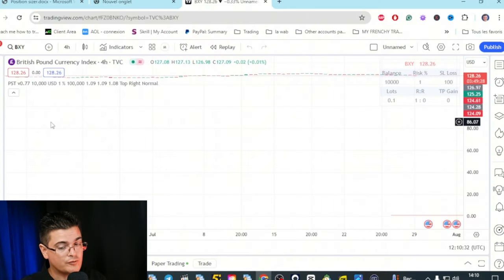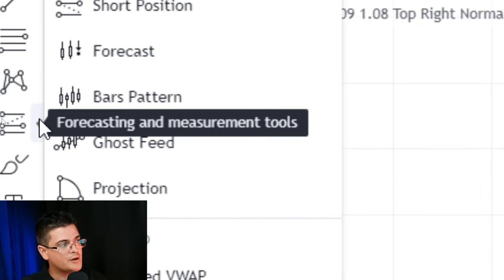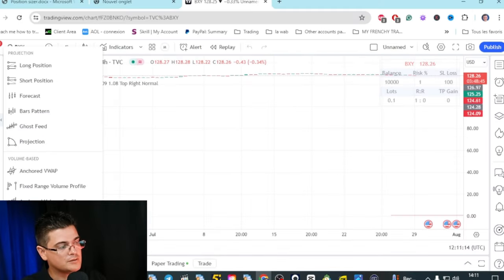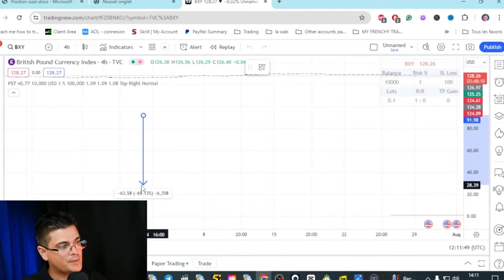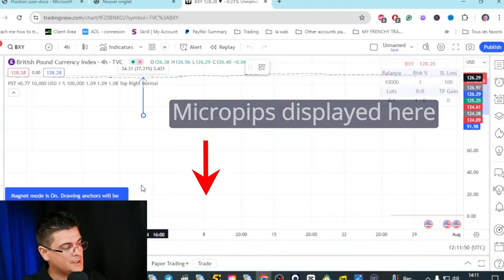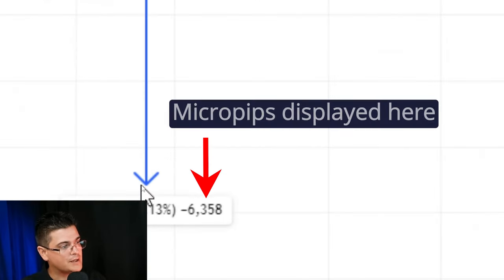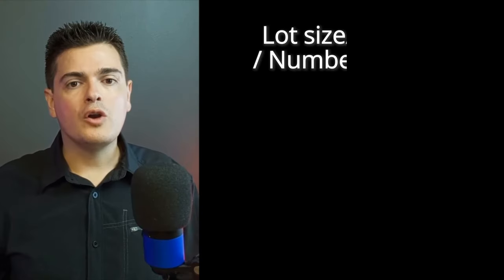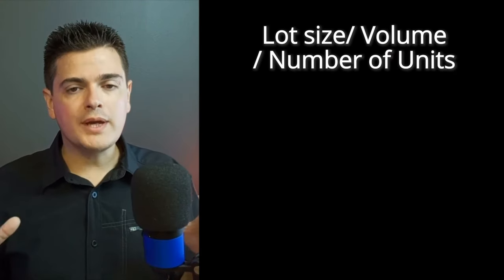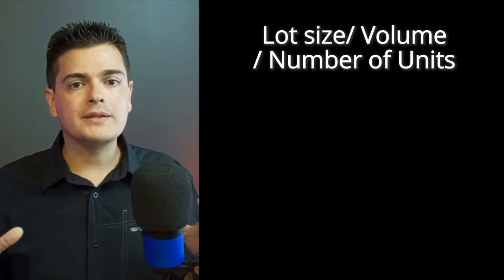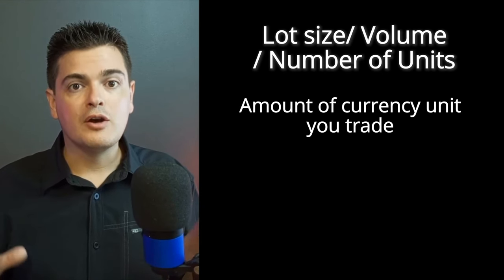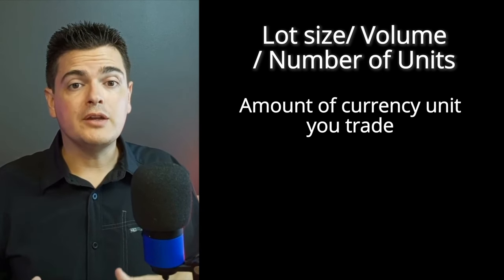And on TradingView, here on the forecasting and measurement tool, you will find the price range. It gives us the amount of pips on the right side. What is a lot size? A lot size in trading determines the amount of currency units you are trading. For example, in forex, a standard lot is 100,000 units of currency.